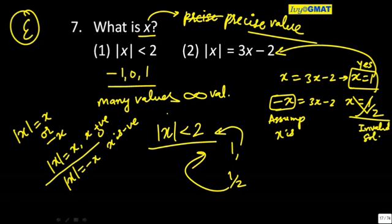This is how... so when I consider mod of x equals minus x, what was my assumption? X is negative. And what did I get? X is half. X is half, which is what? Positive. So this betrays my assumption. That's why this is never the correct route. So the only correct solution to this one is x equals 1, and because it is coming from second statement, my final answer is B.